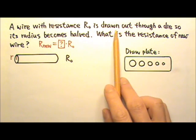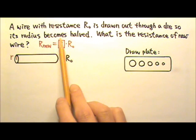A wire with resistance R₀ is drawn out through a die, so its radius becomes halved.